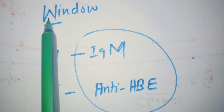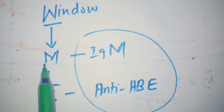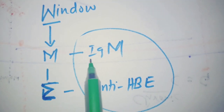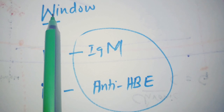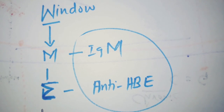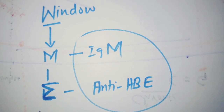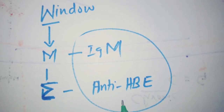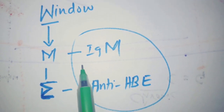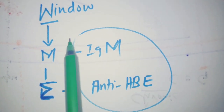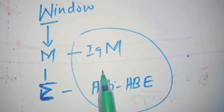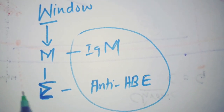For the window phase, you can also remember: invert the W to get M, so IgM is seen in the window phase. Then invert M to get E, so anti-HBe is also seen in the window phase. Therefore the window phase shows IgM and anti-HBe — from the mnemonic, M and E.